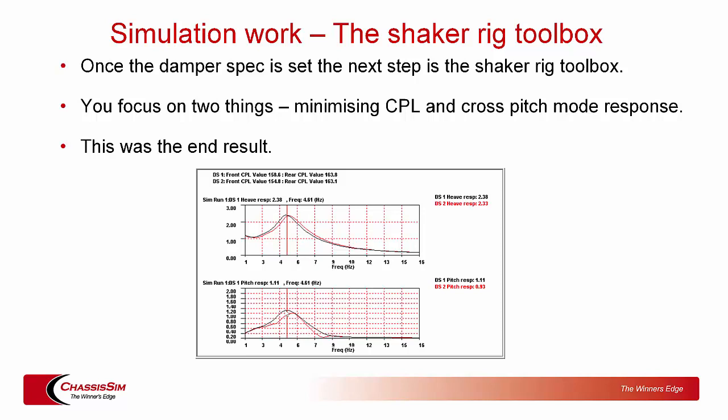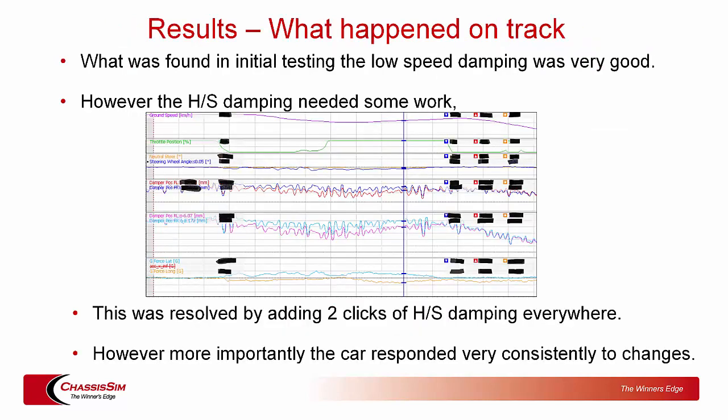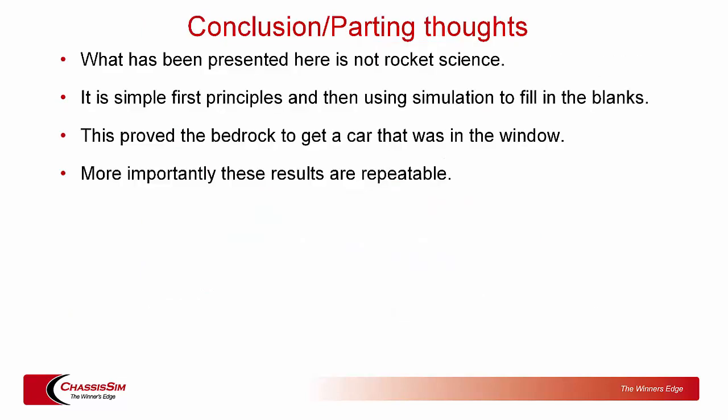What happened on track: in initial testing, low-speed damping was excellent with really good car control. However, high-speed damping needed work — some things were lost in translation. This was resolved by adding two clicks of high-speed damping everywhere. More importantly, the car responded really consistently to changes. You had a solid platform — you were no longer guessing. You knew what the car was doing because the plant was fundamentally controlled.